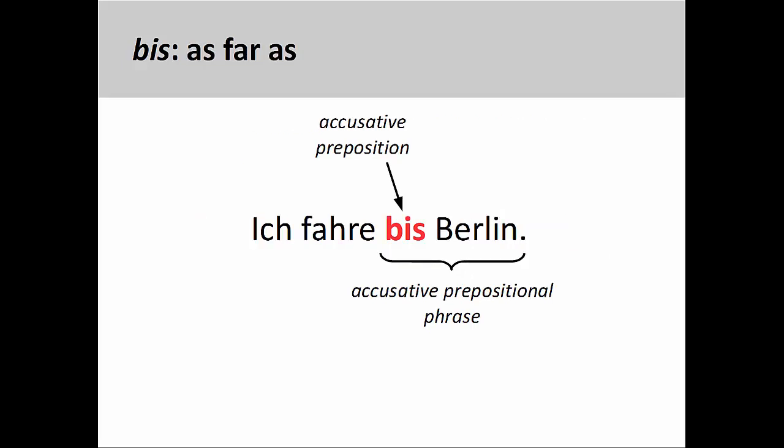Bis, meaning as far as, is also used to express a distance up to a certain point. For example, Ich fahre bis Berlin — I am driving as far as Berlin. Here there are no adjectives in the phrase to take an accusative ending, although the entire phrase is still in the accusative case. Bis is often used in conjunction with another preposition, which will determine the case of the following object.